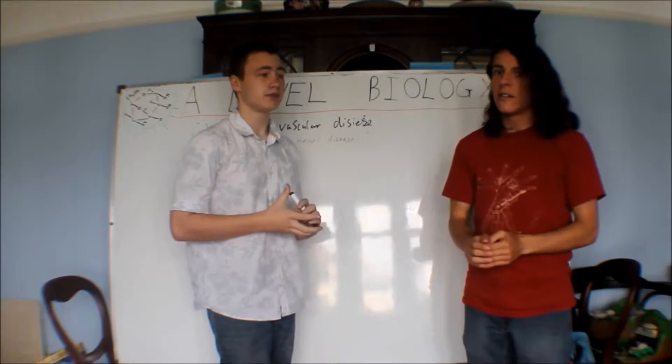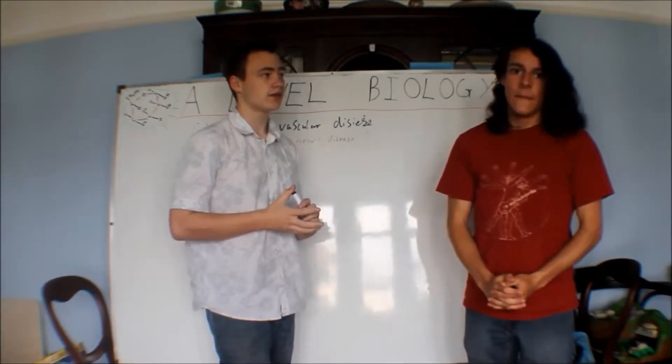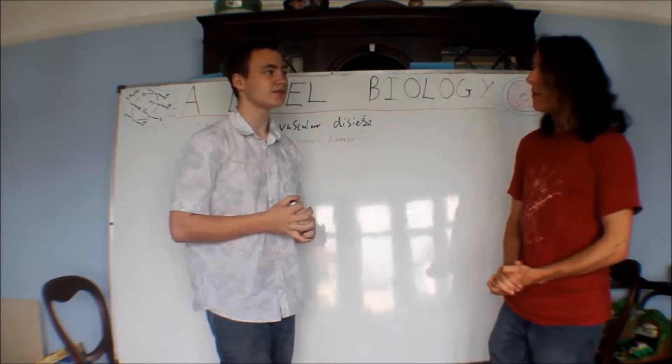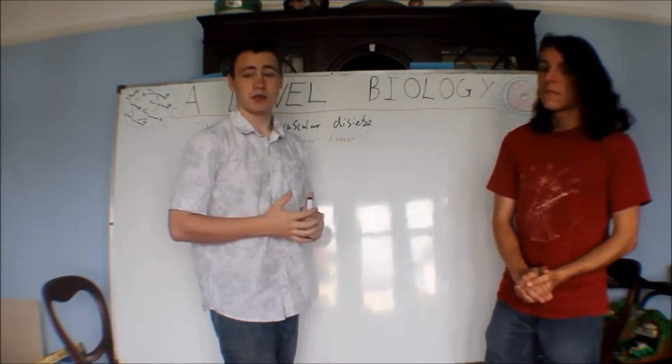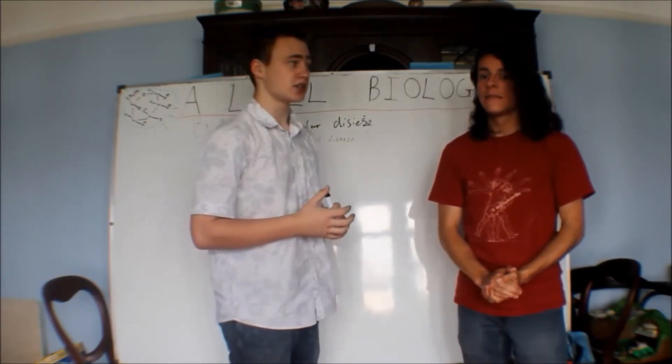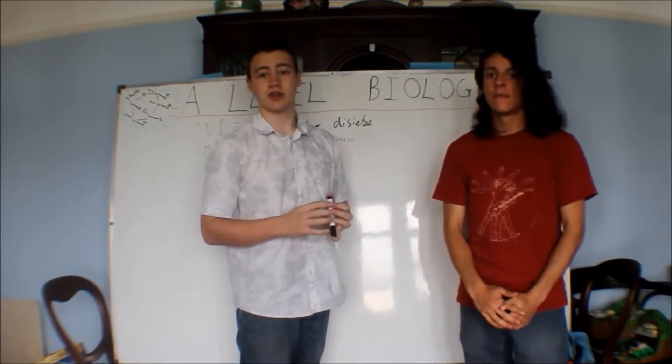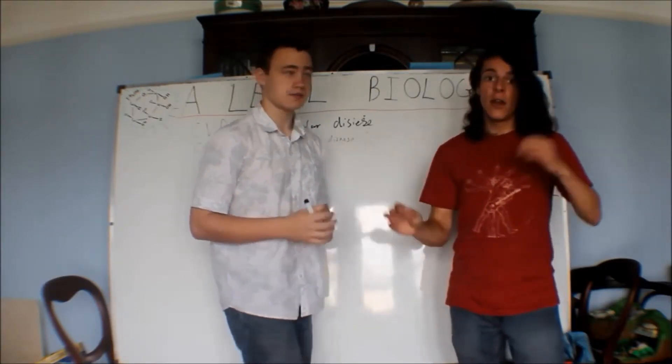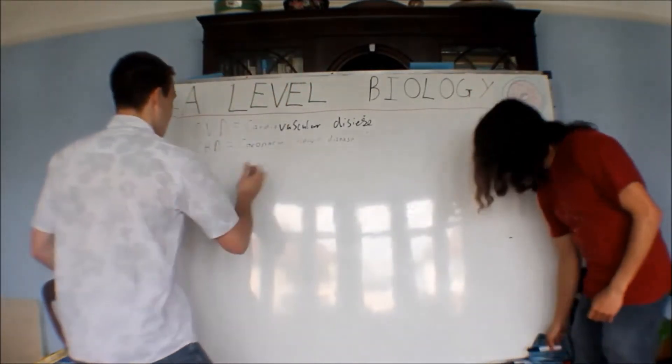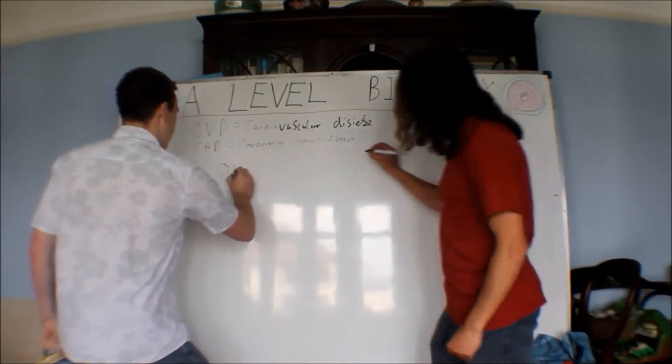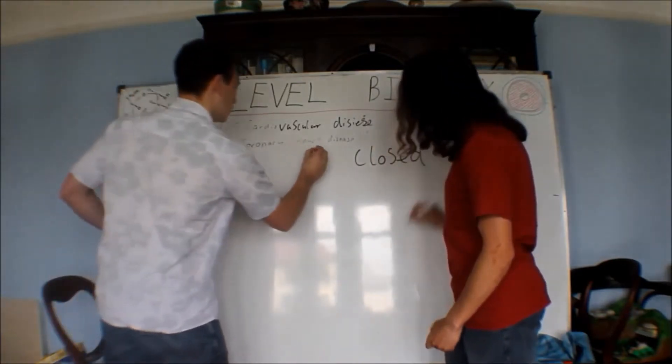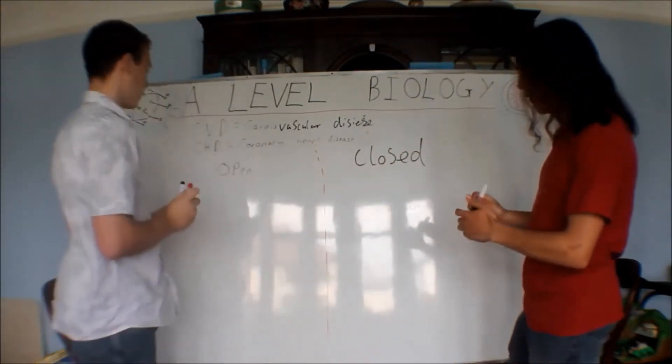We're going to skip over that and go straight to the circulatory systems. You should be familiar with what's in the book at this stage. It's just the different types of circulatory system. Very broadly, if we start, you've got open and closed. I'll do open on this side, closed on this side.